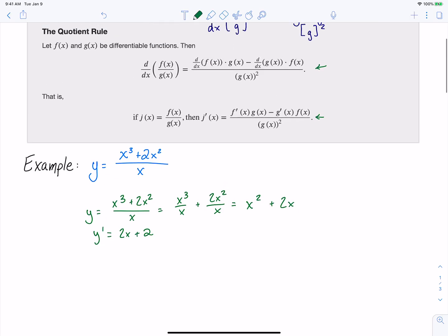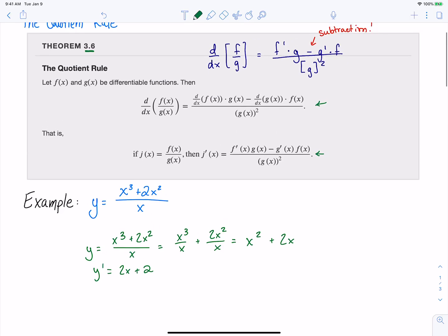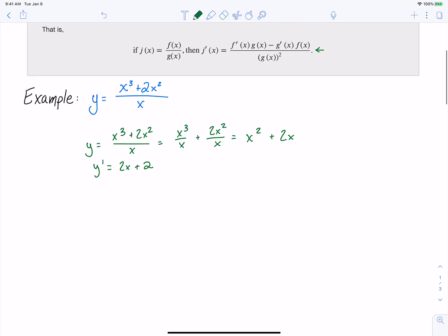Now what we want to do is make sure that when we use this quotient rule we get the same derivative. So because we kind of scrolled down here, I'll go ahead and write the quotient rule for us again. And so it's derivative of the top times the bottom minus the derivative of the bottom times the top and then the bottom function squared.